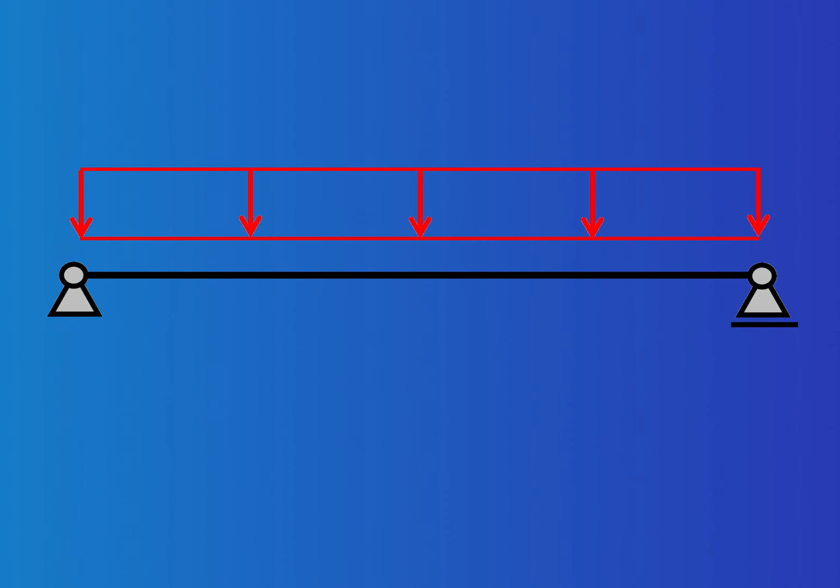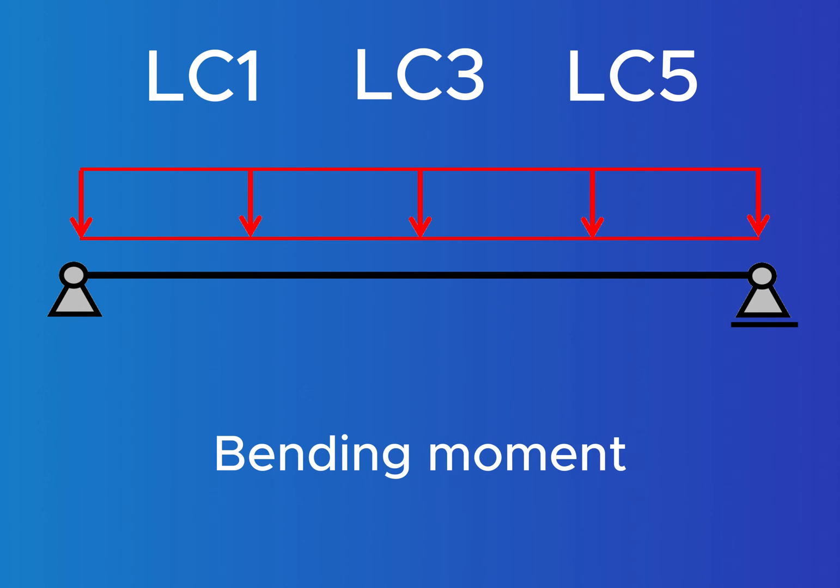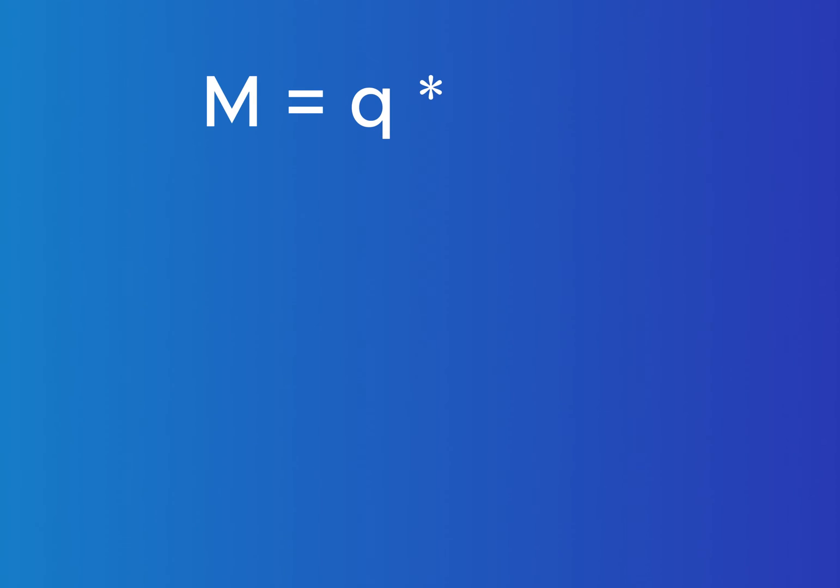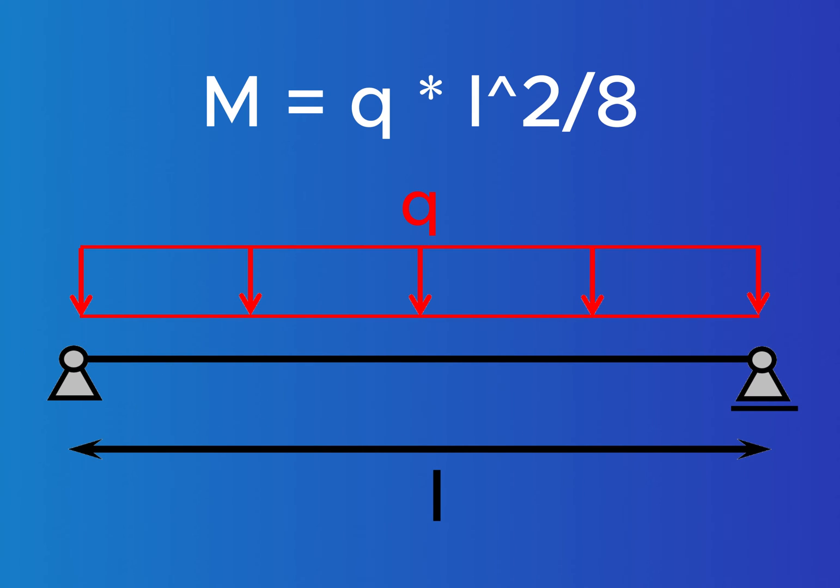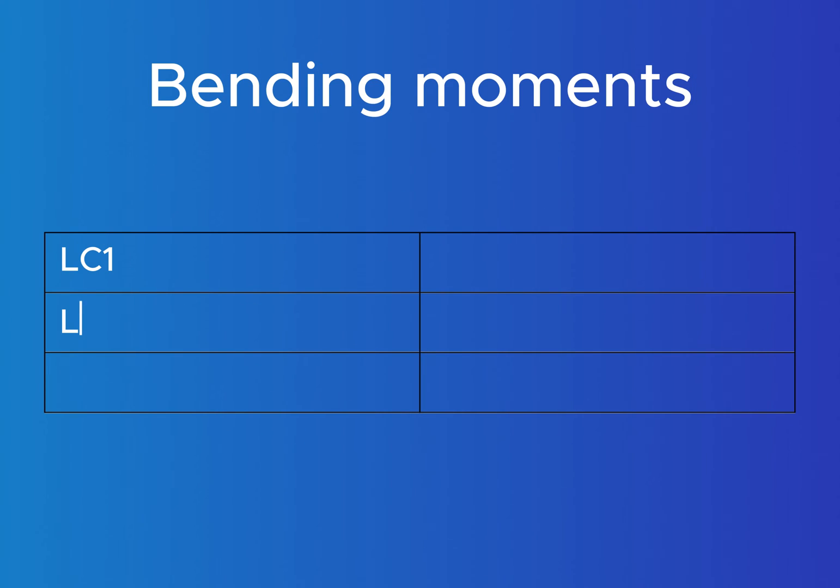From the three leading load combinations LC1, LC3 and LC5, we can go ahead and calculate the most critical bending moment. The highest bending moment in a simply supported beam is found in the mid-span and can be calculated with the most important formula in structural engineering: Q times L squared over 8, where Q is the applied load on the beam and L is the span. With this formula we can now calculate the bending moment for all three different load combinations.